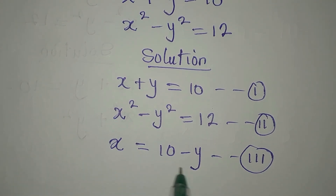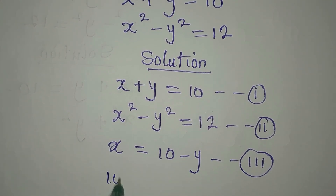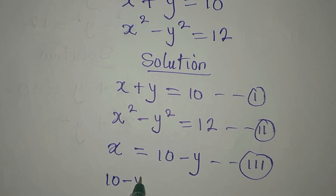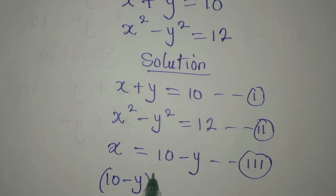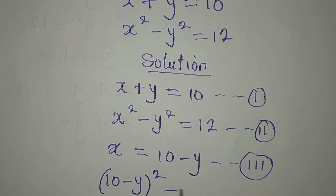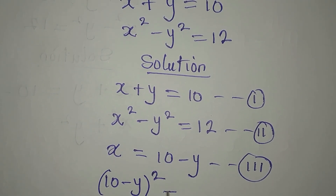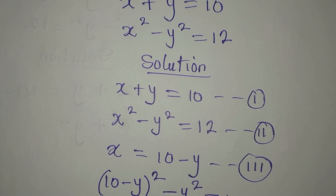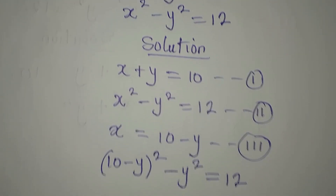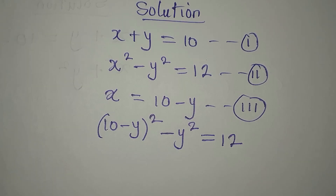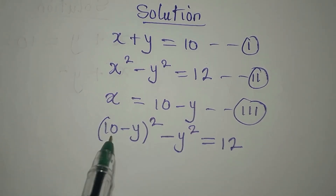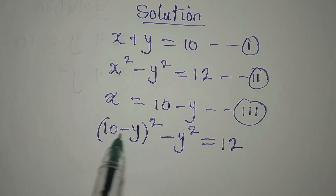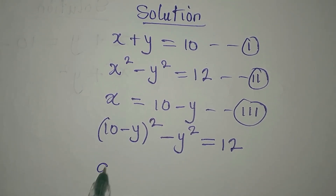In place of x squared, I'm going to write (10 minus y) to the power of 2, then minus y squared will still appear, and everything is equal to 12 on the other side.